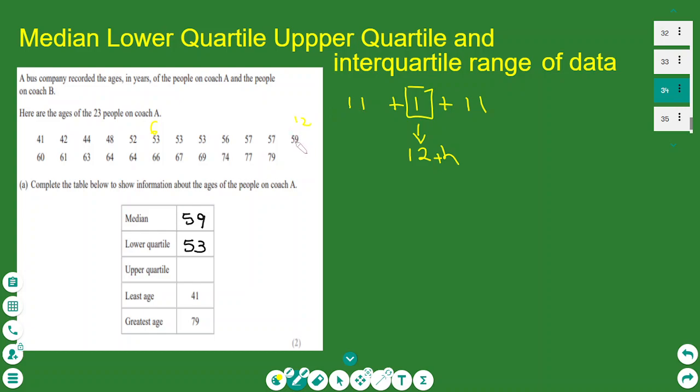And now let's find the number. This is the 12th. So the lower quartile is, according to the numbers, the list, is the 17th. And the 17th number is 64.